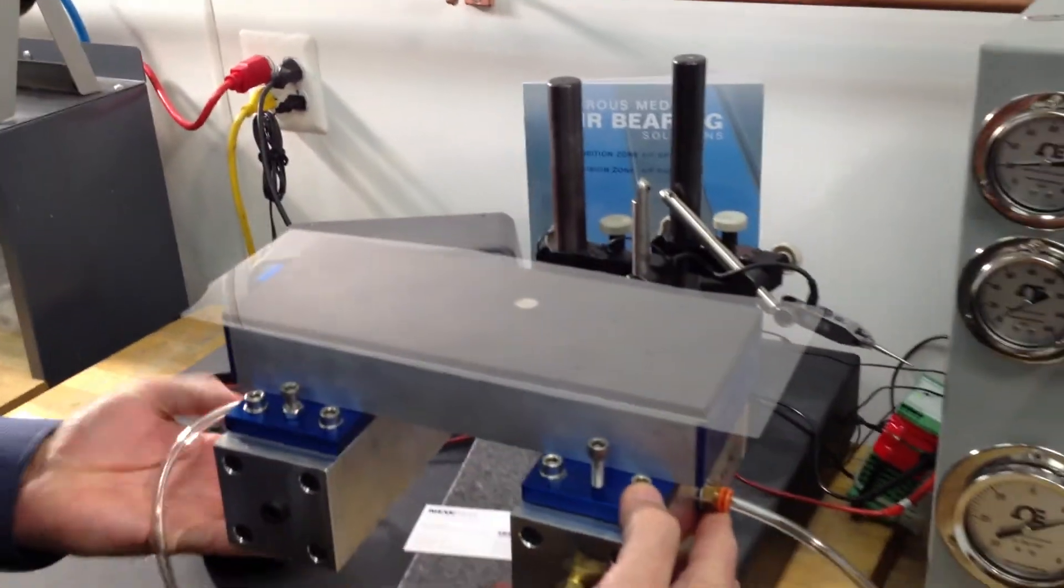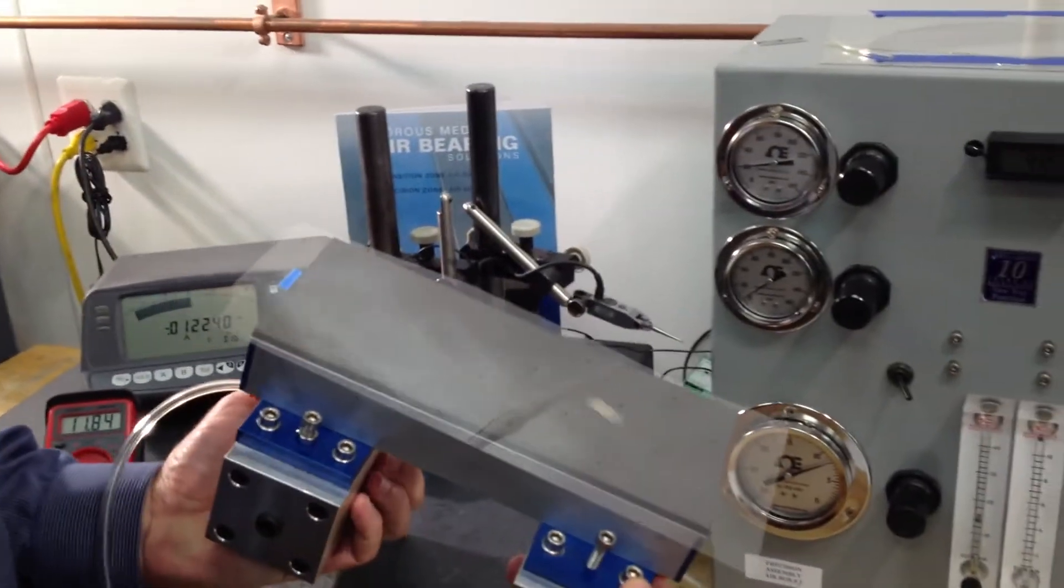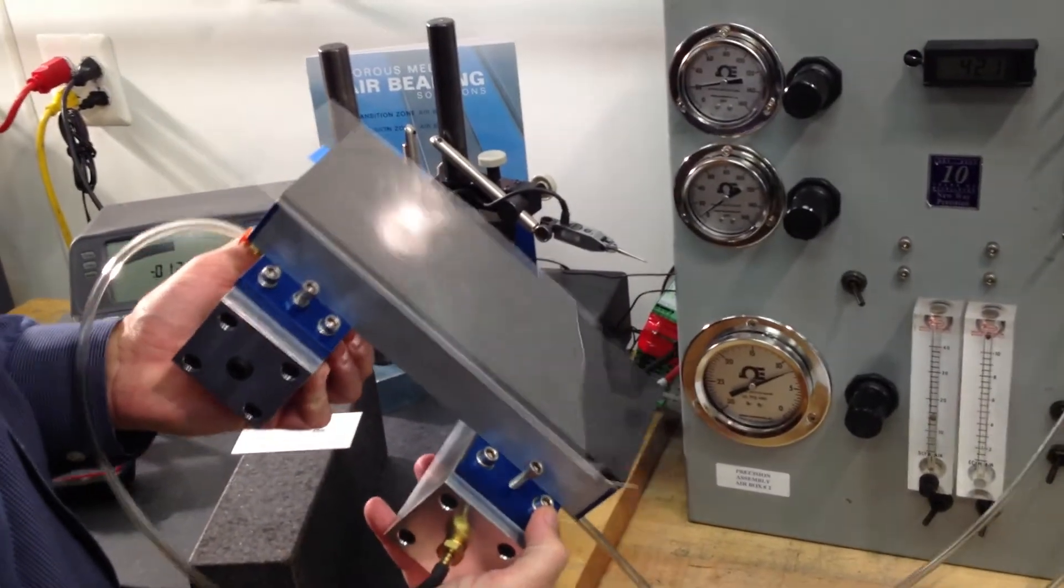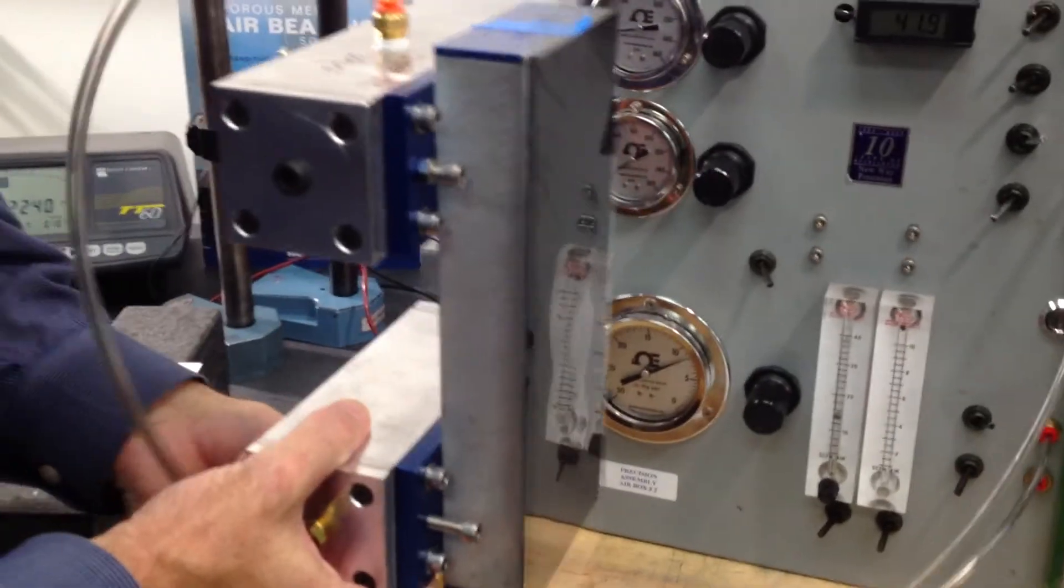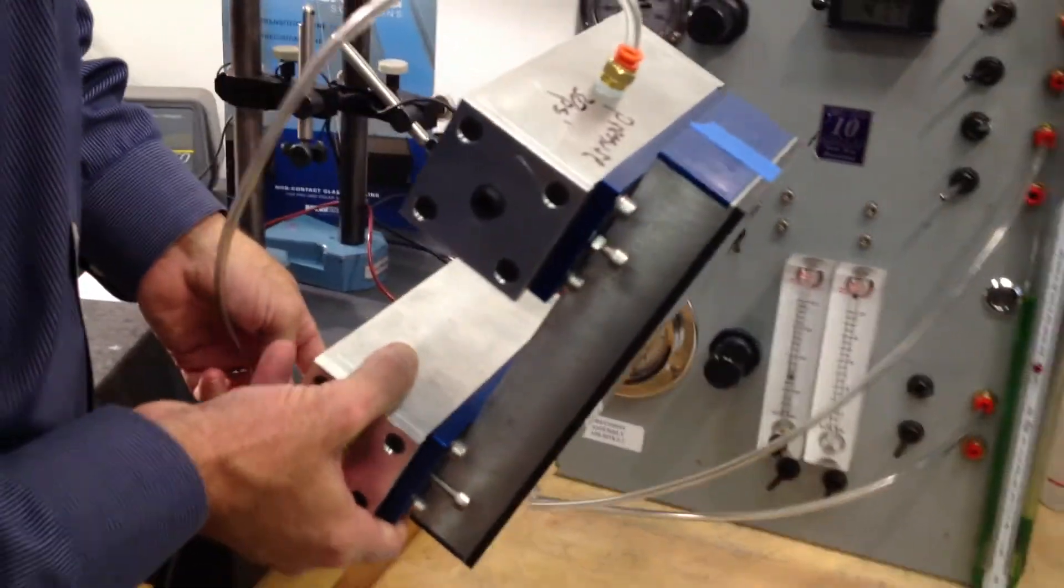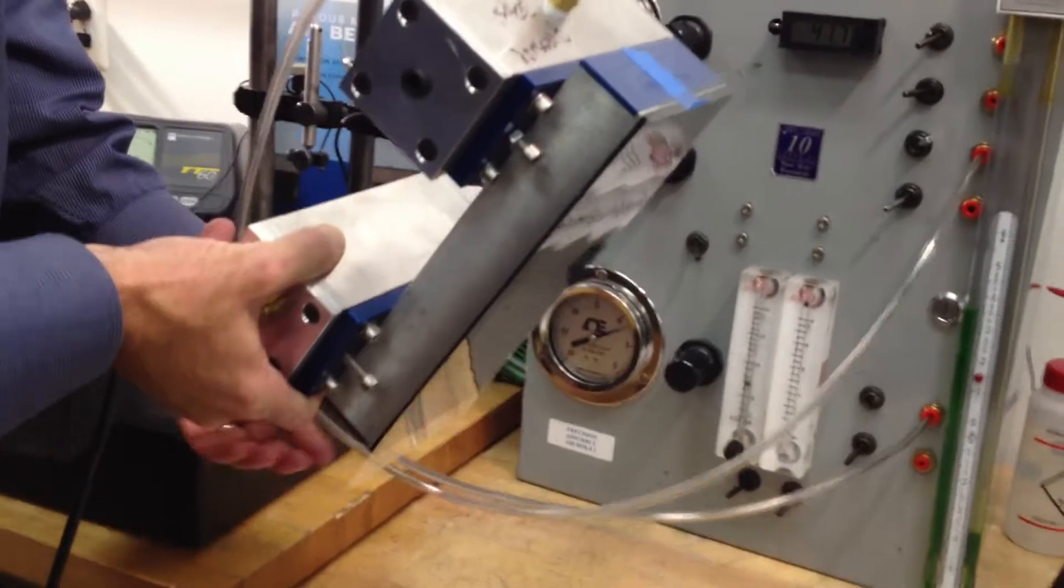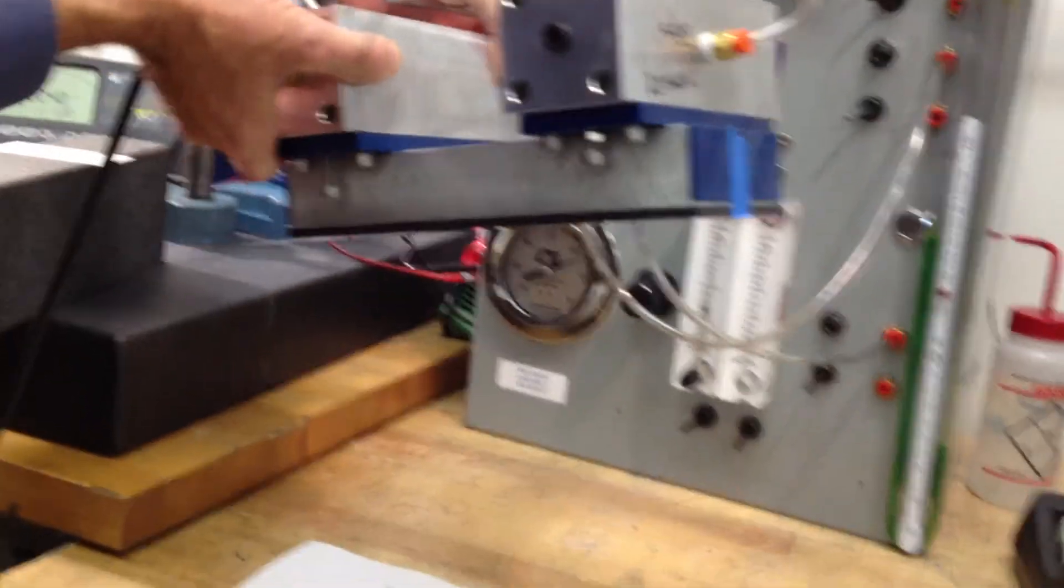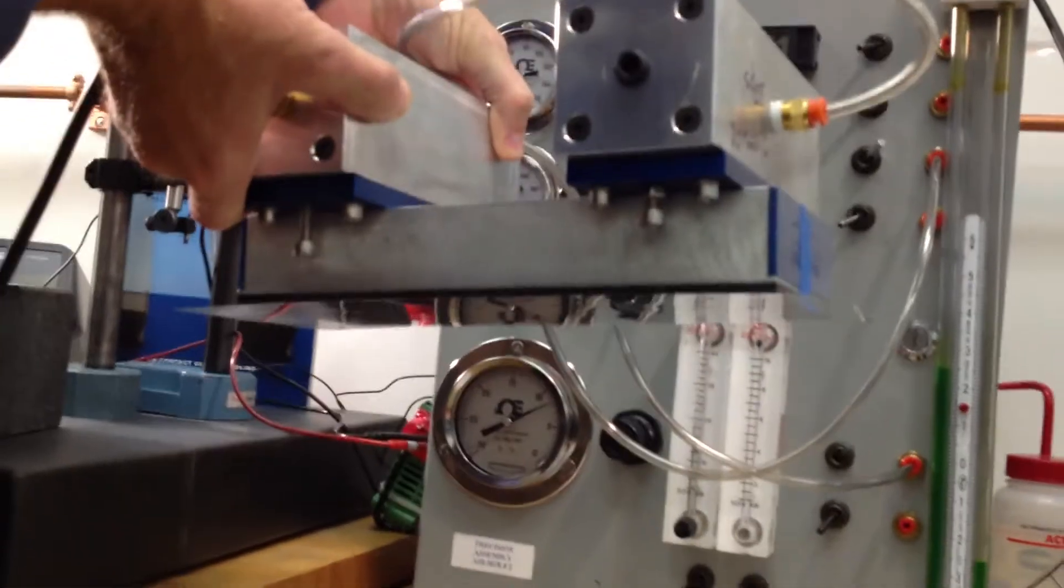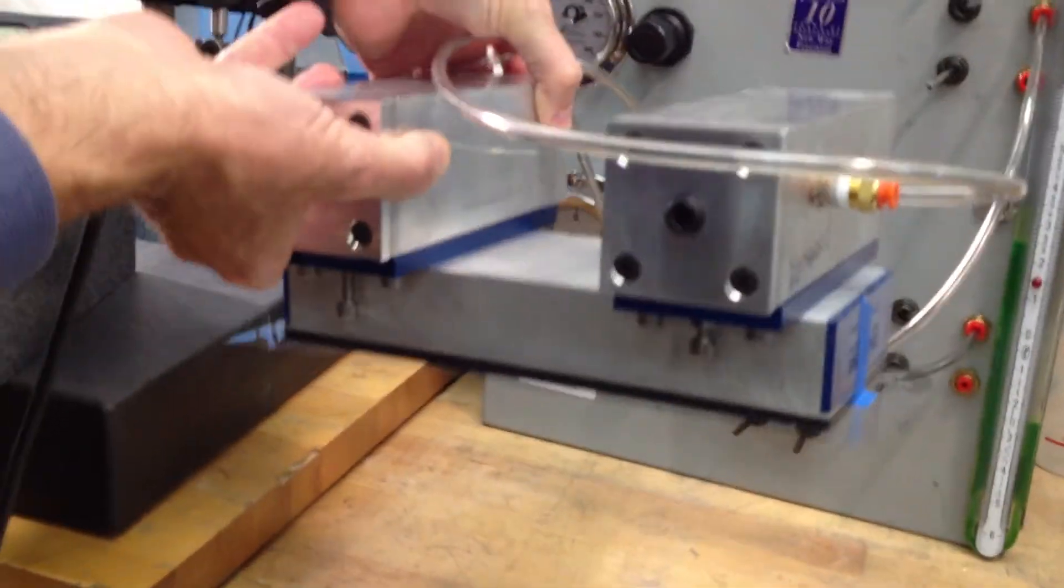See the glass is frictionless. We're flying at about 2 thousandths of an inch. There goes the aluminum piece, but I can turn it over, and then I can even continue to turn it. You can see we are upside down. So there's definitely a vacuum force. The glass is still completely frictionless.